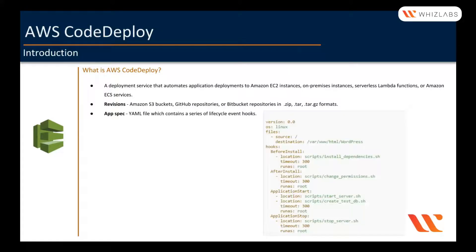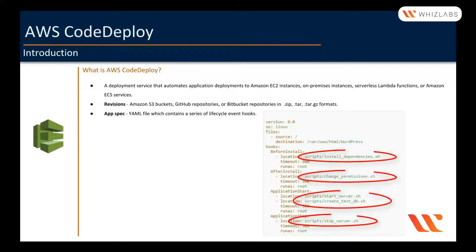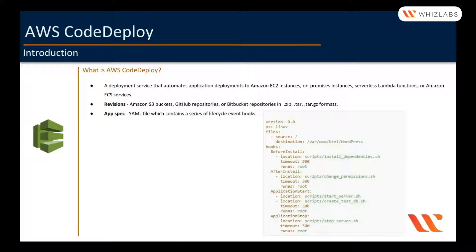The AppSpec file is basically a YAML format file, similar to what we have seen in CodeBuild. The content in the hooks section of the AppSpec file varies depending on the compute platform of our deployment, which are EC2 instances, serverless Lambda functions, or Amazon ECS services. The scripts we provide under the hooks section will be executed in a certain order, which we will see later in this course.